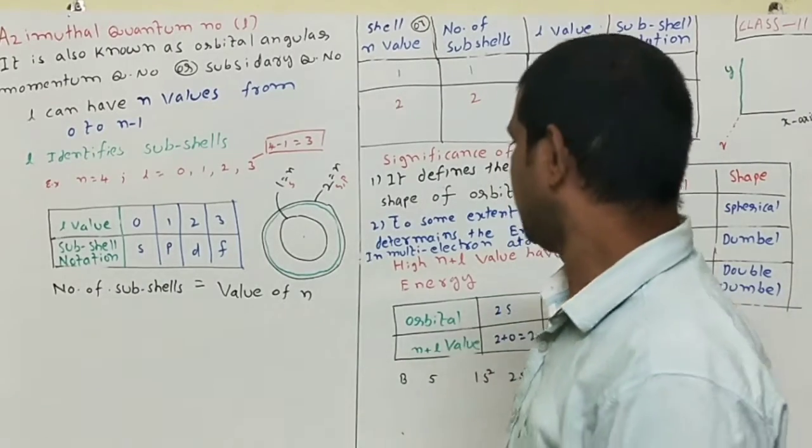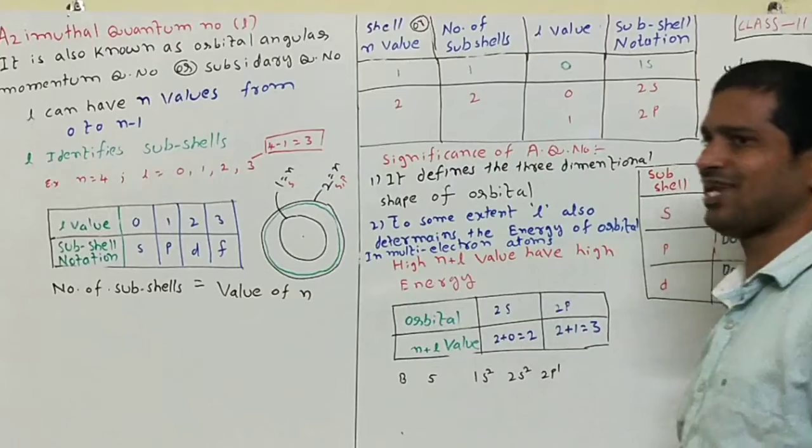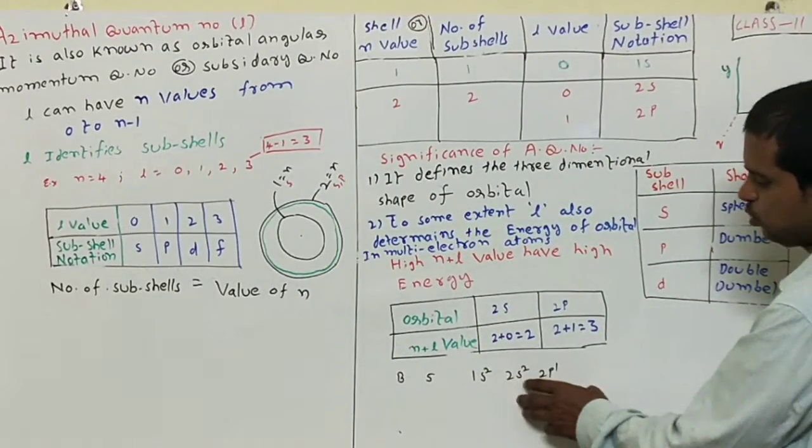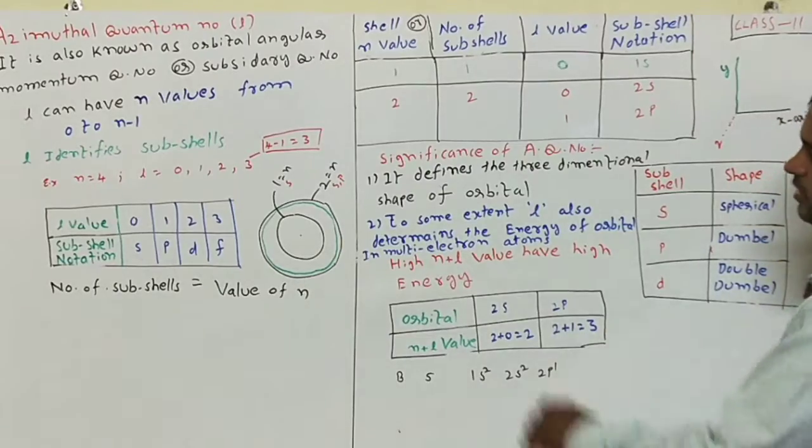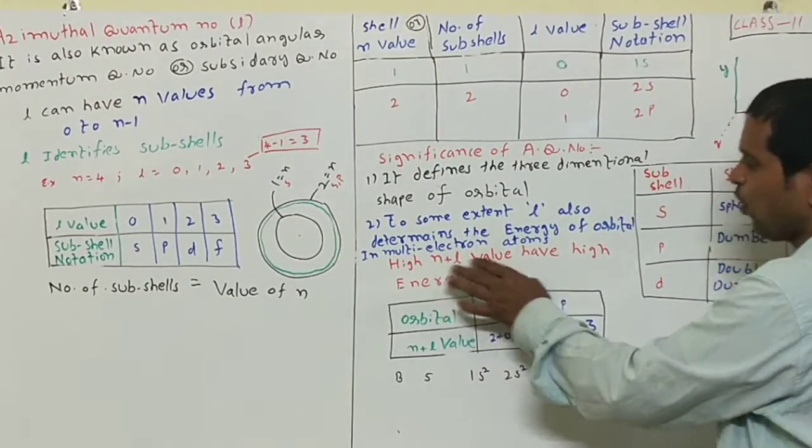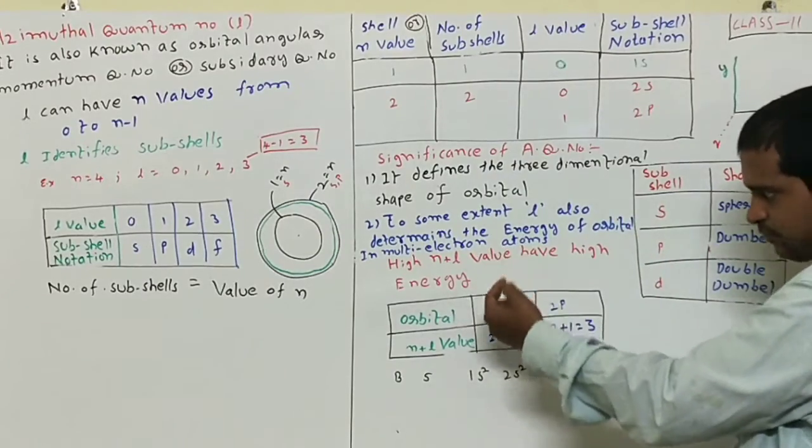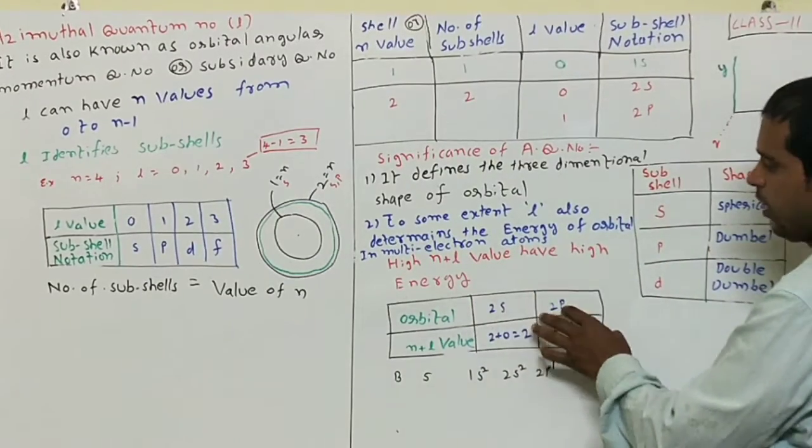Example: helium having two electrons and boron having five electrons, and the electronic configuration of boron is 1S² 2S² 2P¹. See here, high N plus L value has high energy.